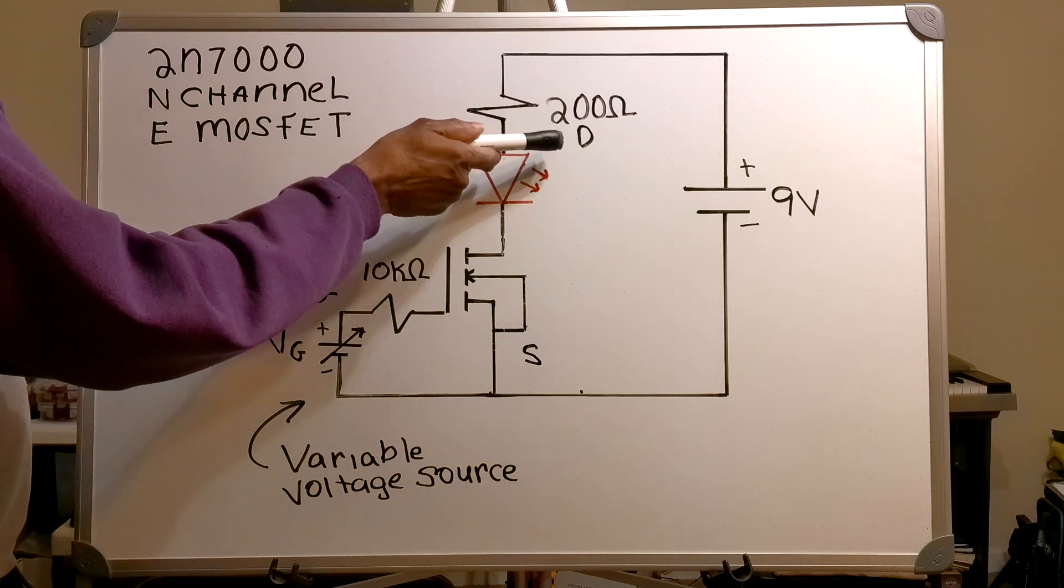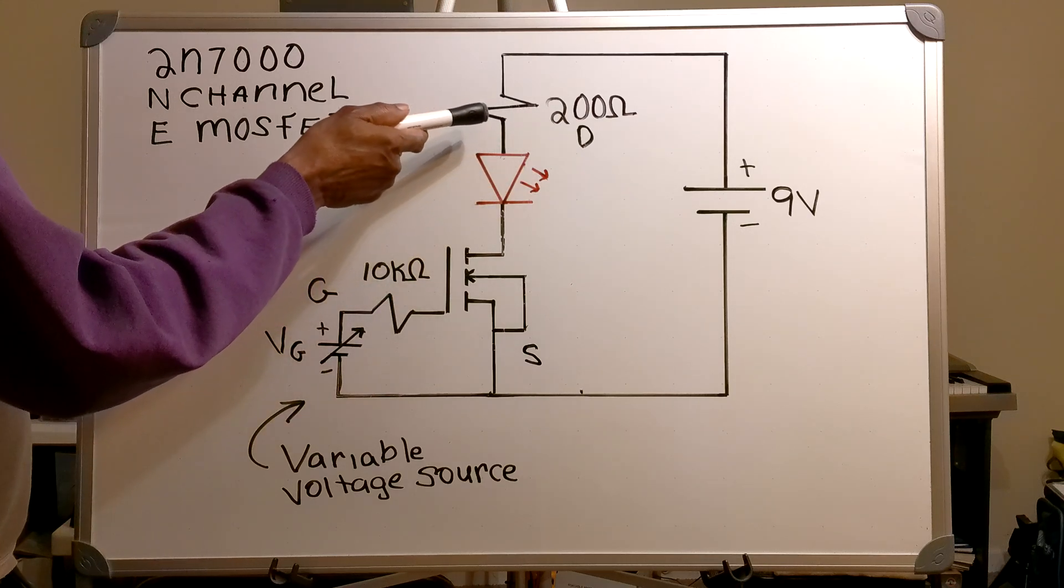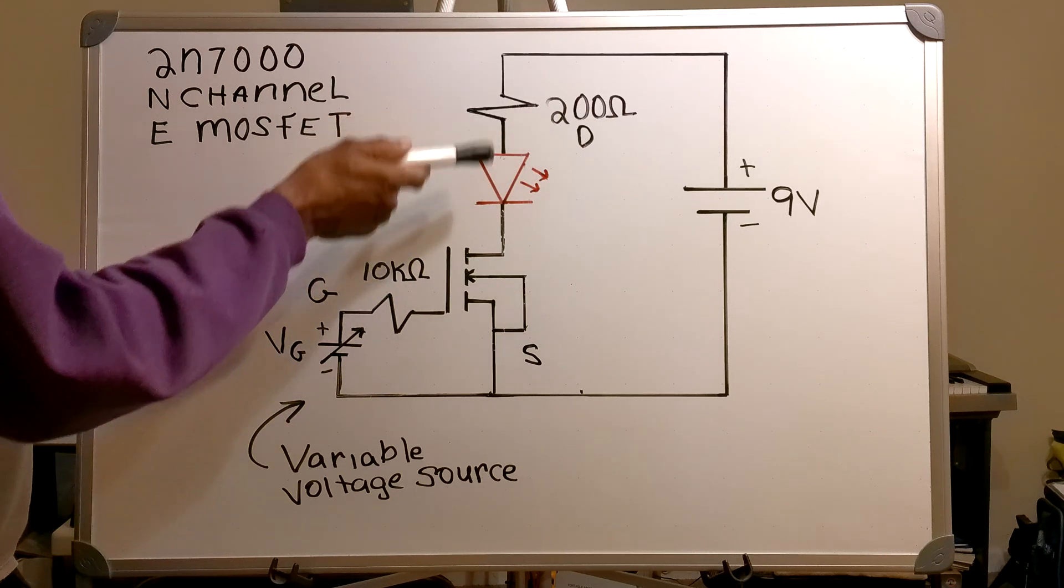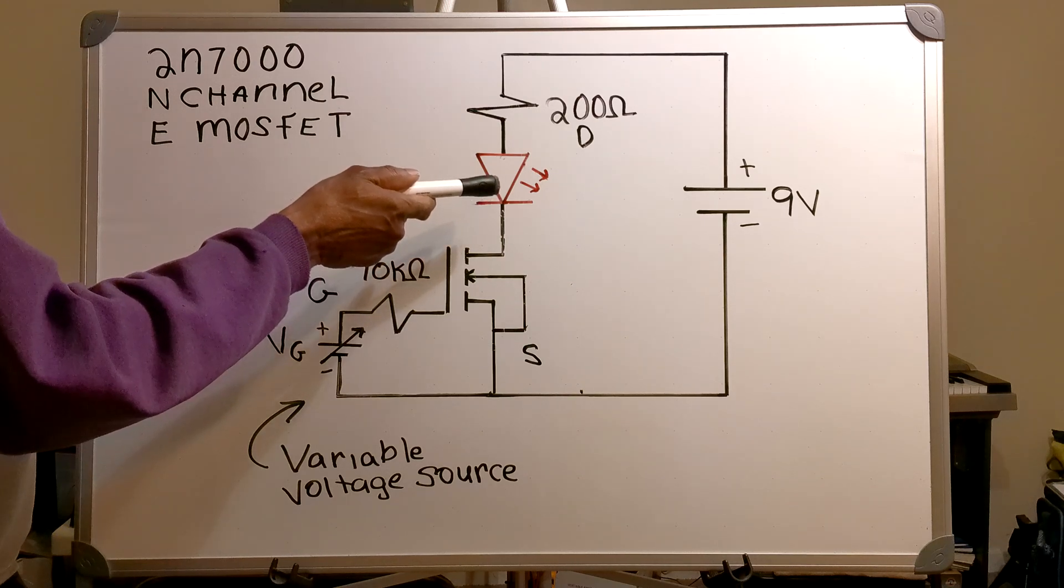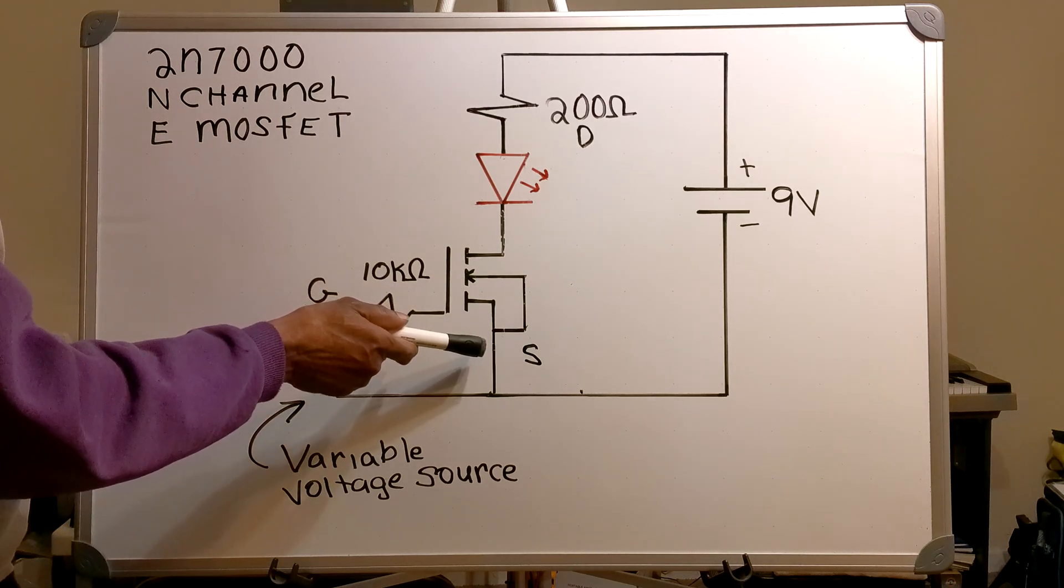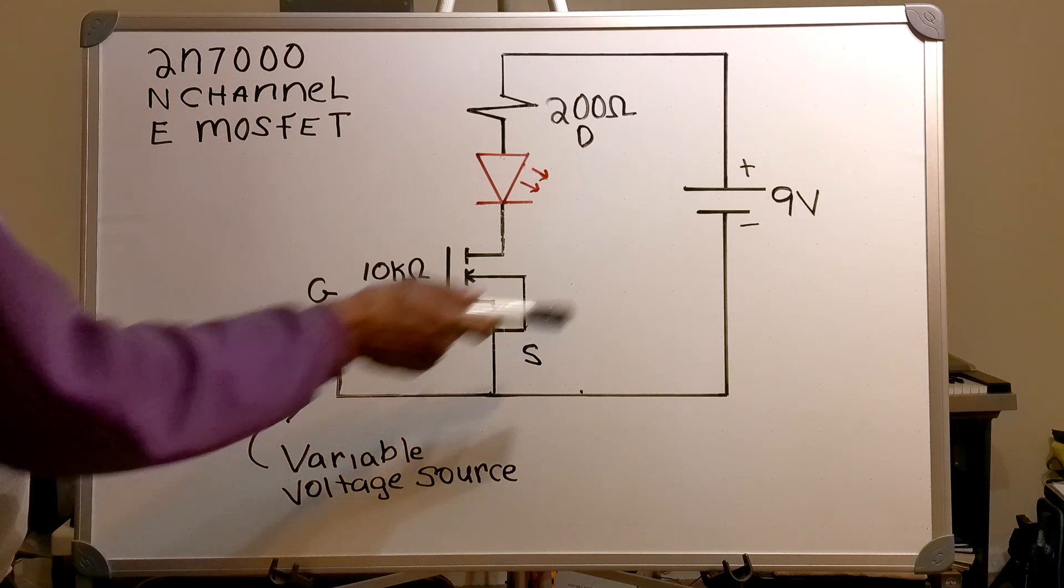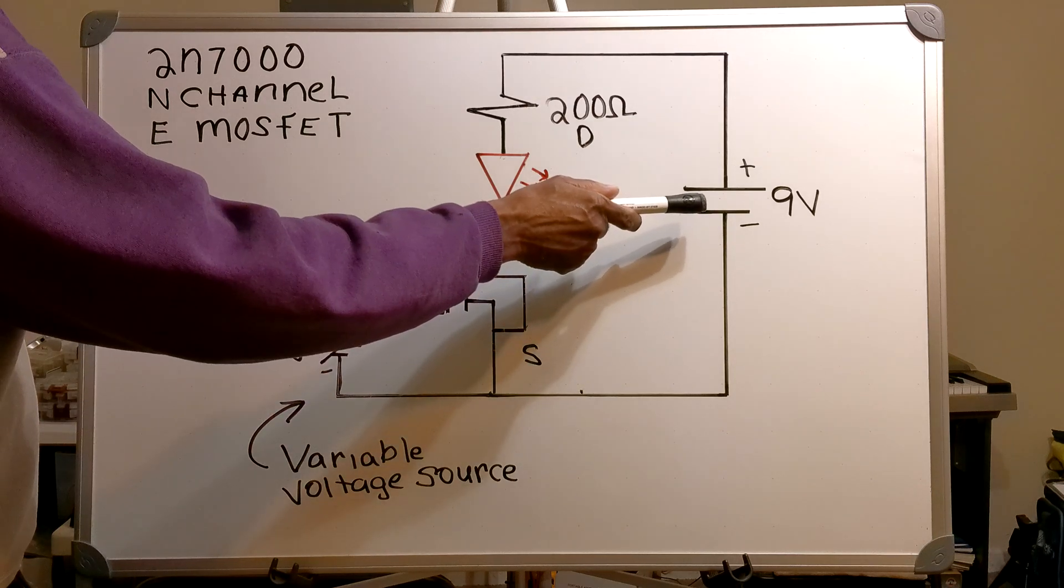On the drain side I've got a 200 ohm resistor in series with a red 2 volt LED. The source side is going to the negative side of my 9 volt DC source.